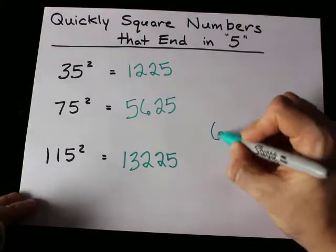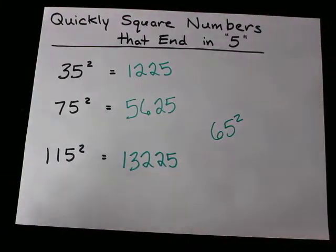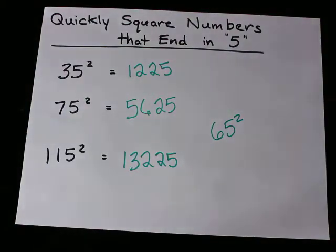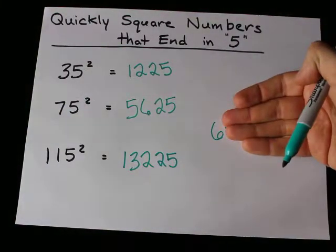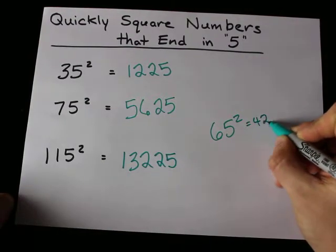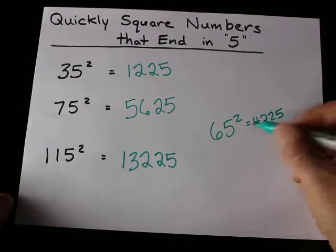Why don't you try? Why don't you calculate 65 squared for me? That was me looking at my watch. Chop off the 5. 6 times 7 is 42. That gives me 4225 and I'm done.